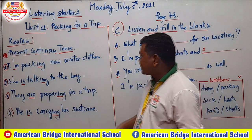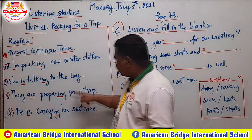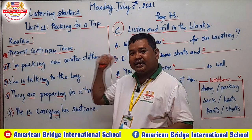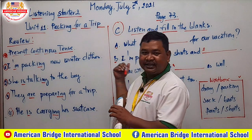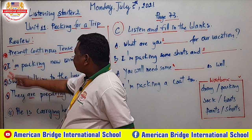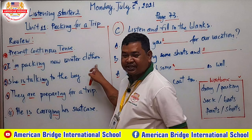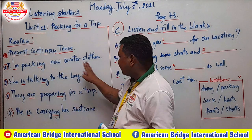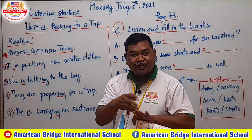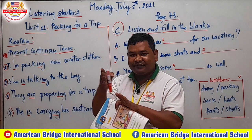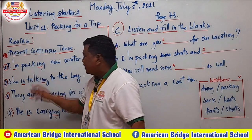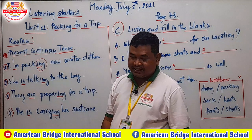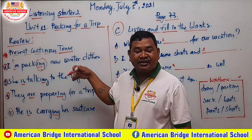I'll raise up a full sentence related to our lesson today connected to present continuous tense. For example: 'I am packing new winter clothes.' The structure is subject + to be + verb-ing + object. So: I am, he/she is, we/you/they are — plus the verb with -ing. Here, 'pack' becomes 'packing.'